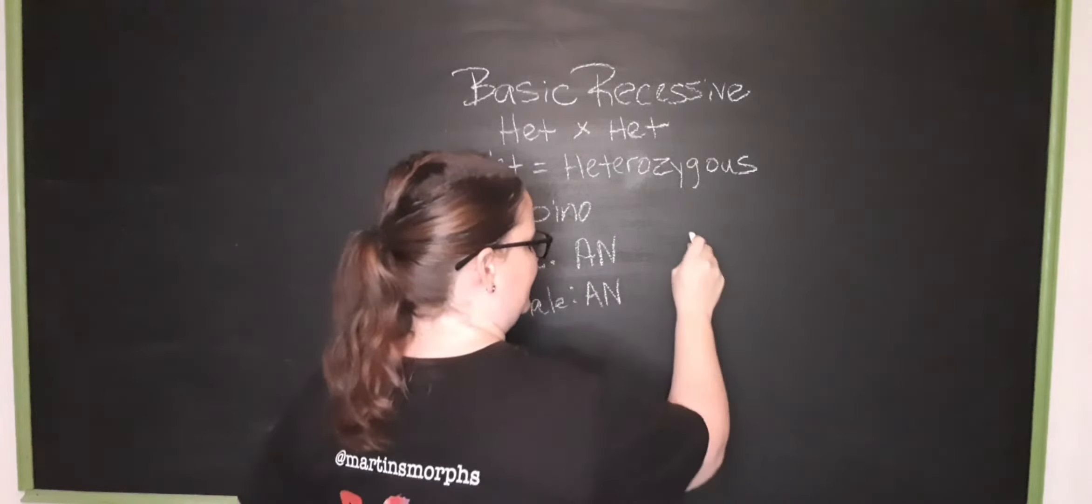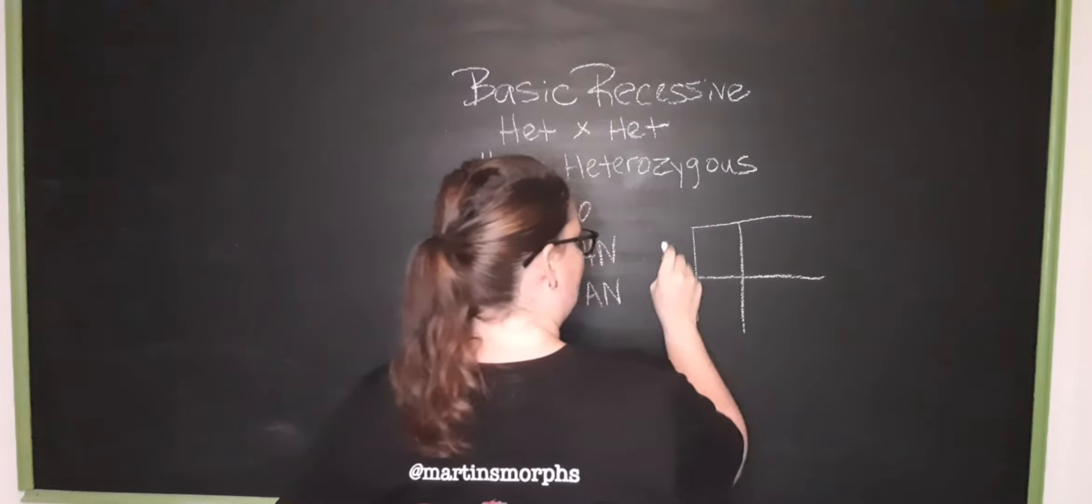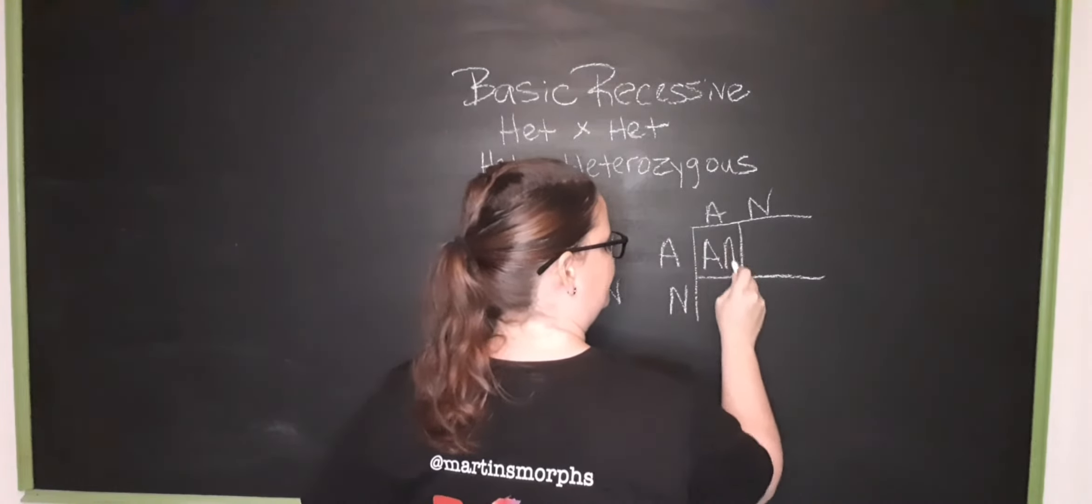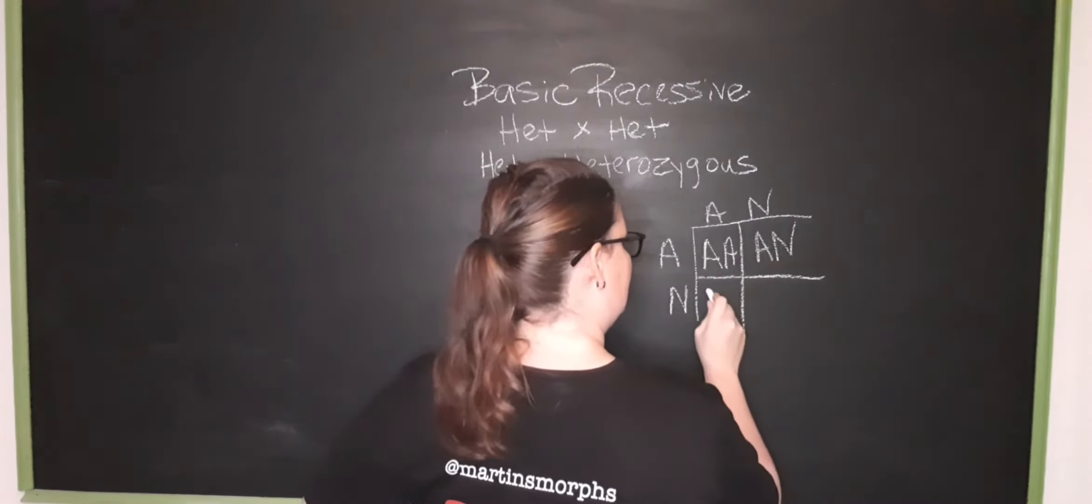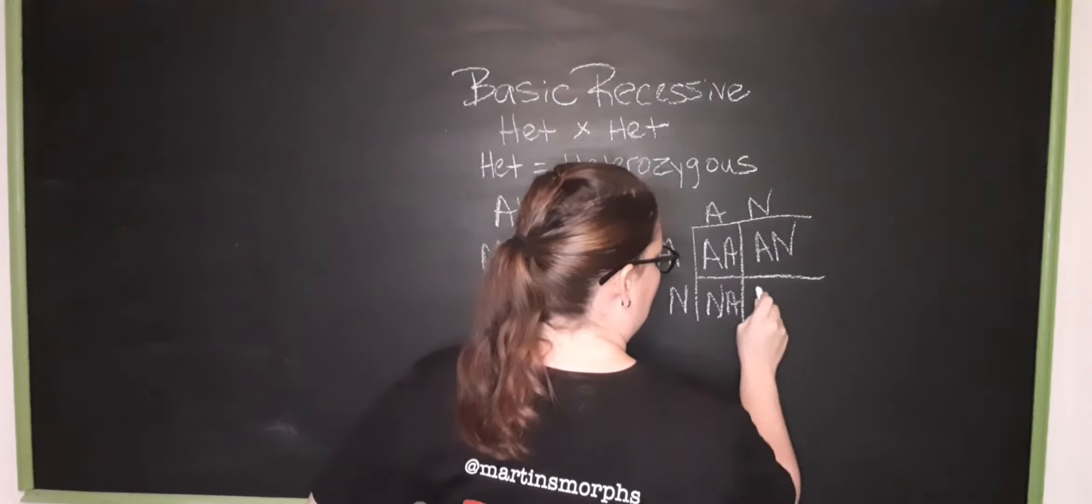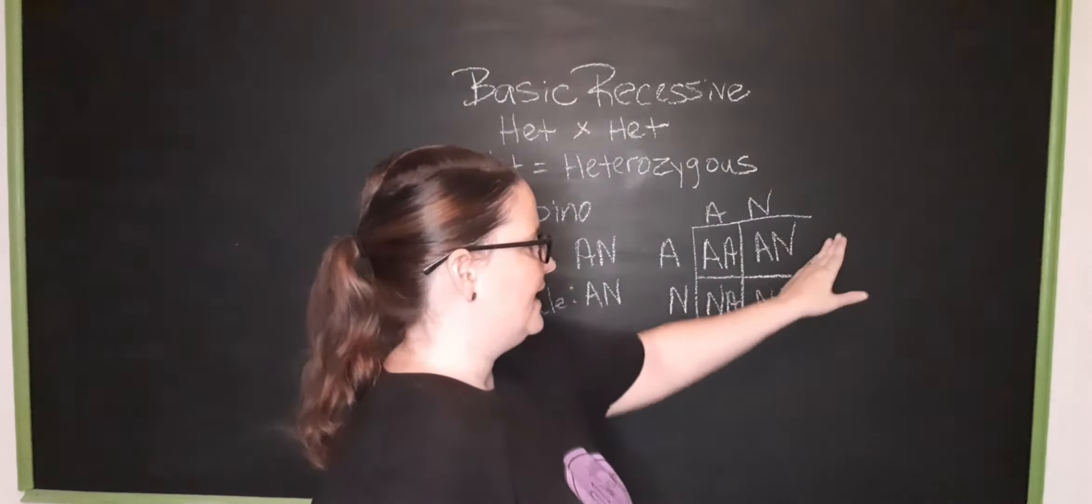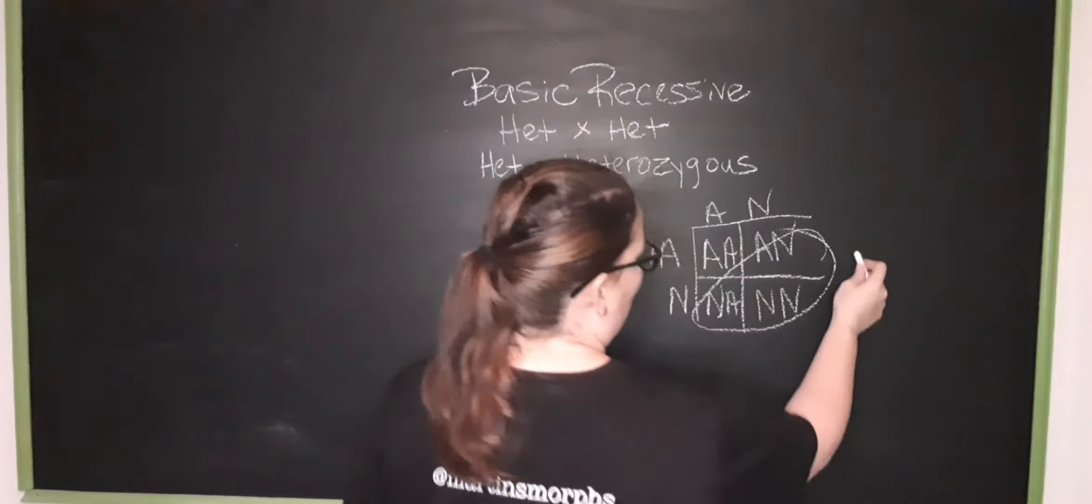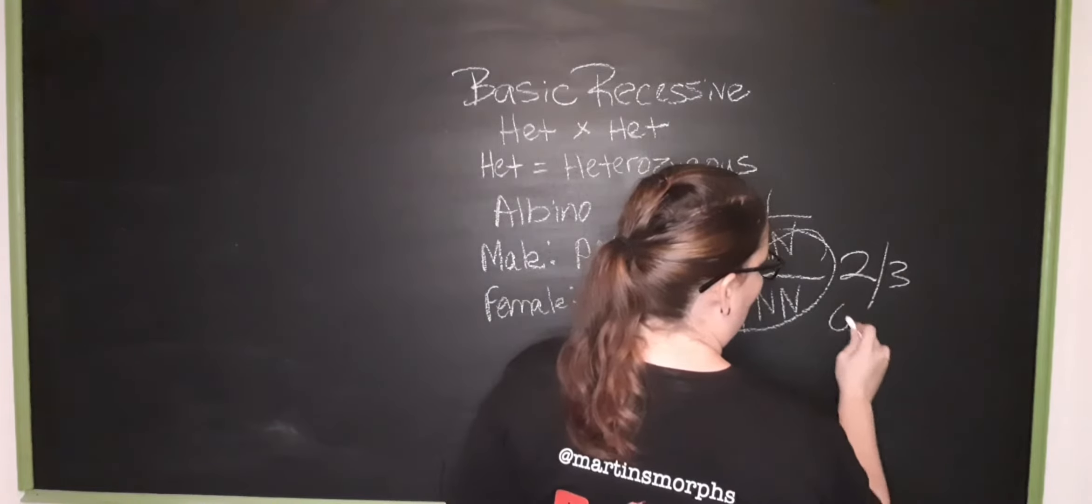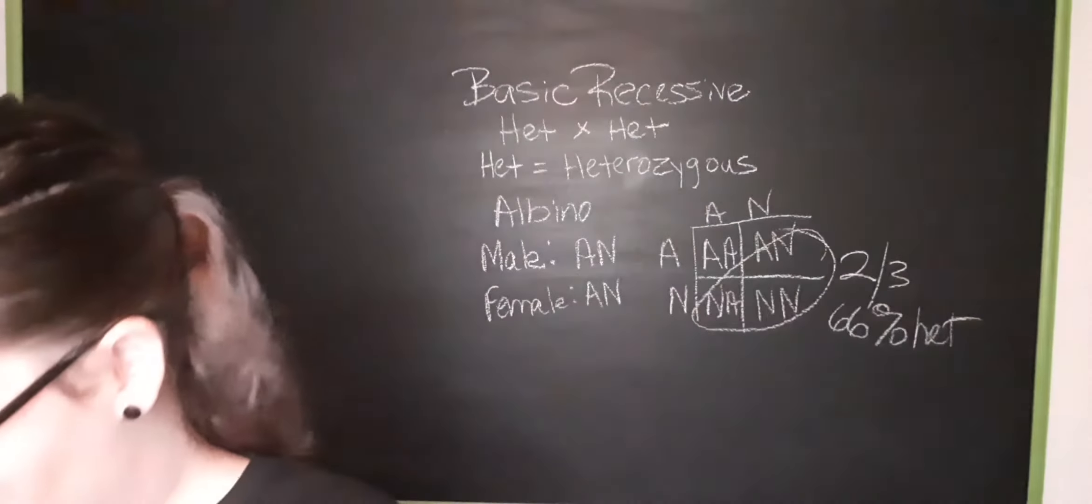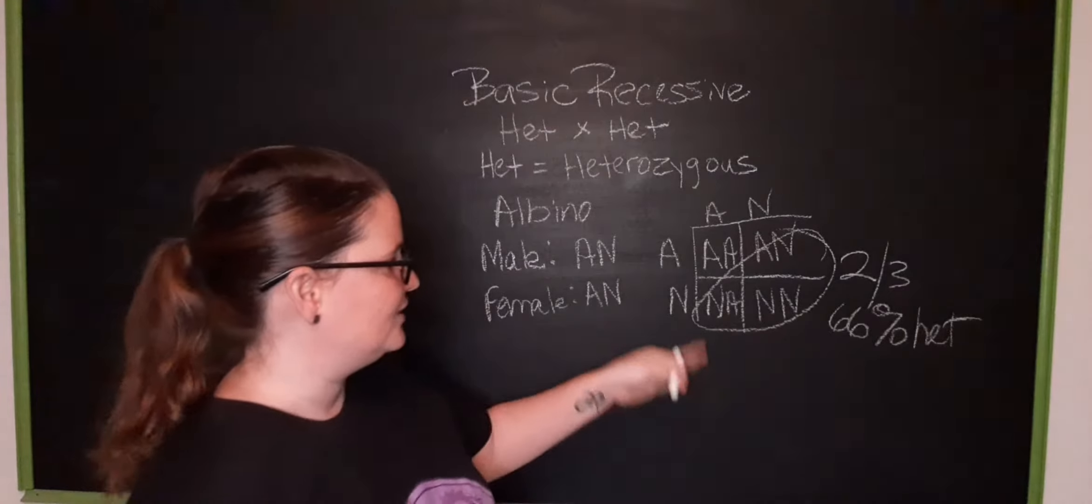So if you run the Punnett square you're going to get this. You will get one visual, one het, one het, and one normal. But there is no way to know which one of these carry the gene for the albino. So that is why we say that they are 66 percent het usually, but we do know mathematically that two out of three of these will be het for albino. We know it's 66 percent.